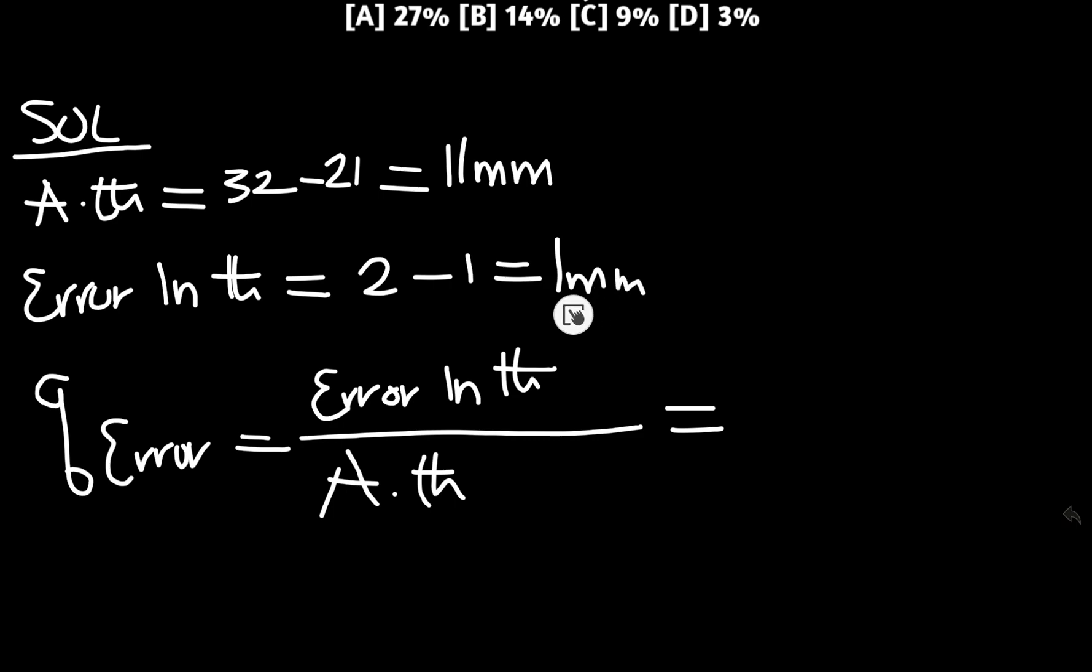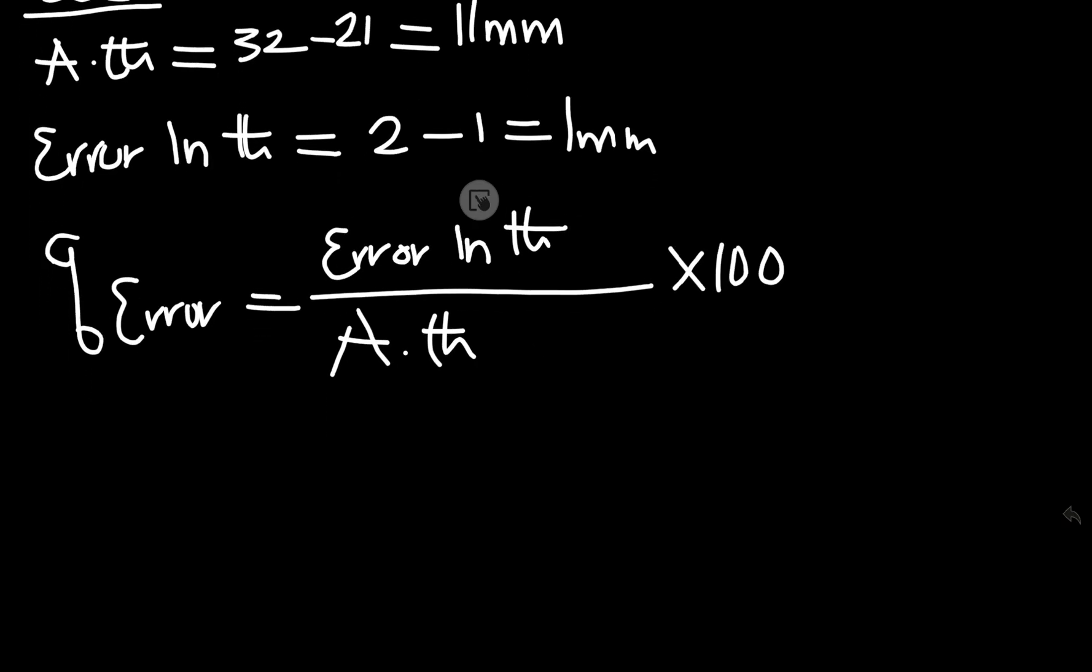If you plug in your data, error in thickness, we said 2 minus 1 equals 1. Actual thickness is 11. So you can see it should be, excuse me, times 100. So if you go down, we will say equals to percentage error.